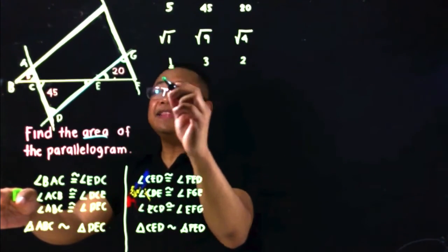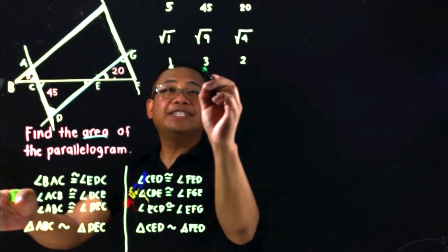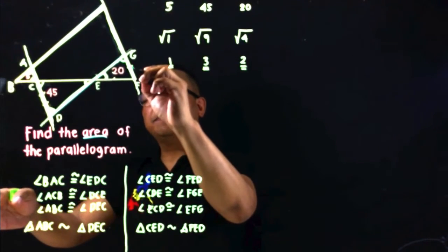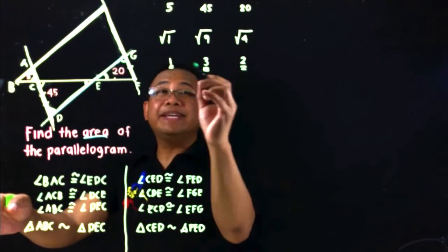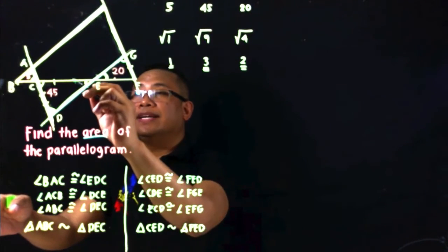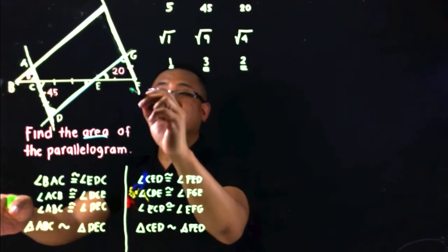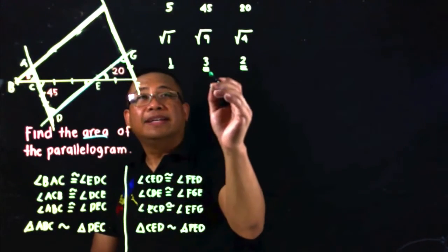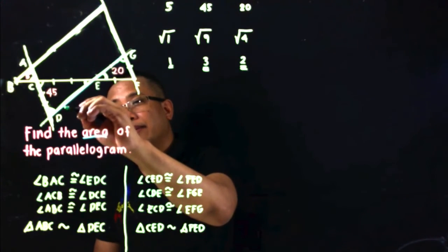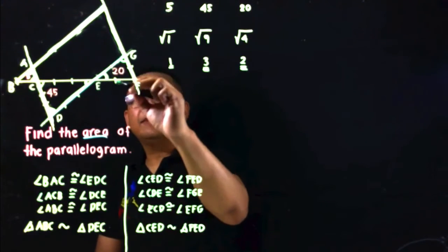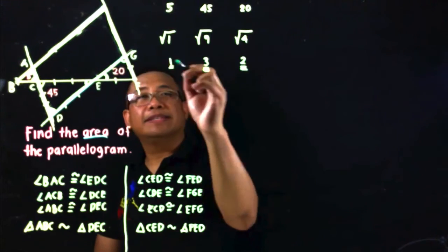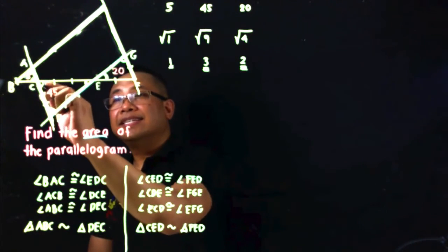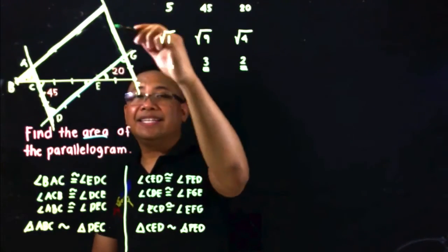This means if the smallest triangle has a side of 1 unit, the largest triangle's corresponding side is 3 units and the third triangle's corresponding side is 2 units. We subdivide the sides accordingly — the large triangle's side into 3 equal parts and the third triangle's side into 2 equal parts. This enables us to form smaller triangles of the same area as the unit triangle that will tessellate the parallelogram.